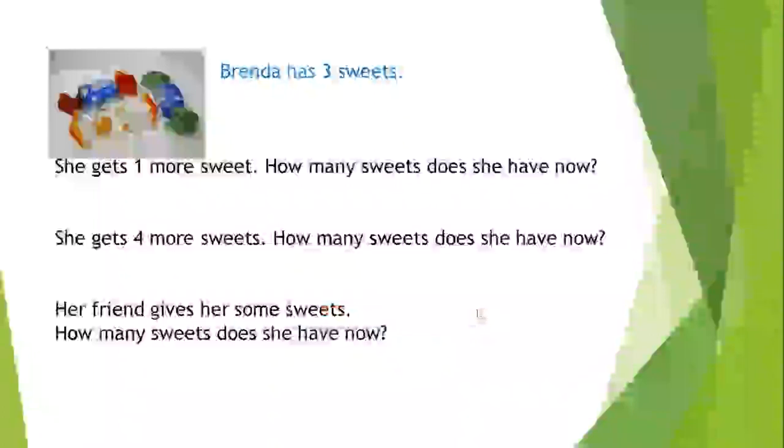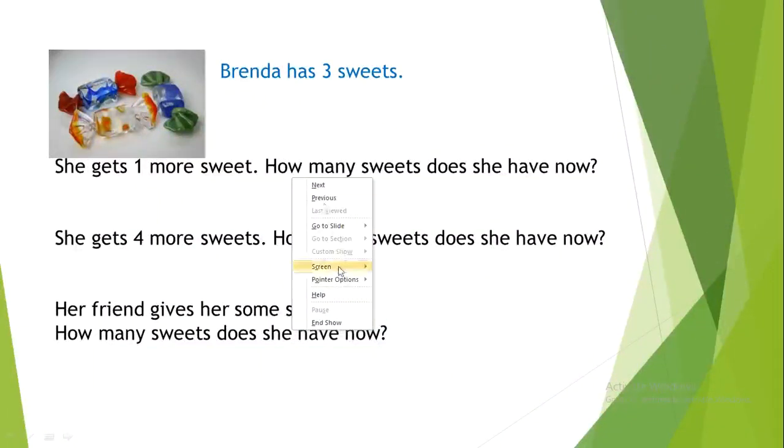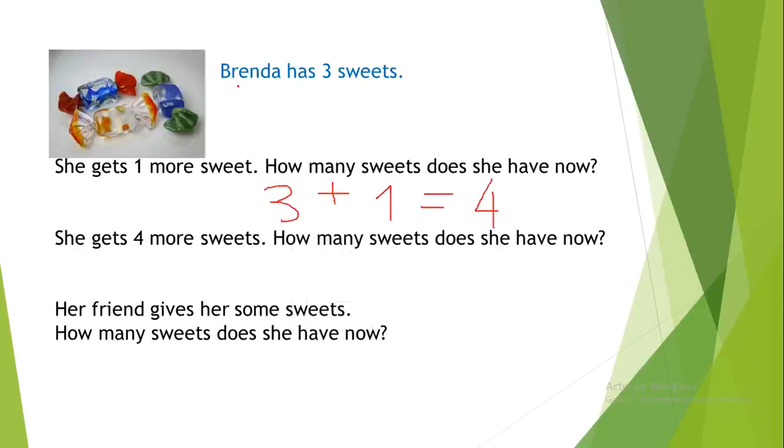Brenda has 3 sweets. She gets 1 more sweet. How many sweets does she have now? So, 3 plus 1 equals 4 sweets. Brenda has 3 sweets. She gets 4 more sweets. How many sweets does she have now? So, 3 plus 4 equals 7.